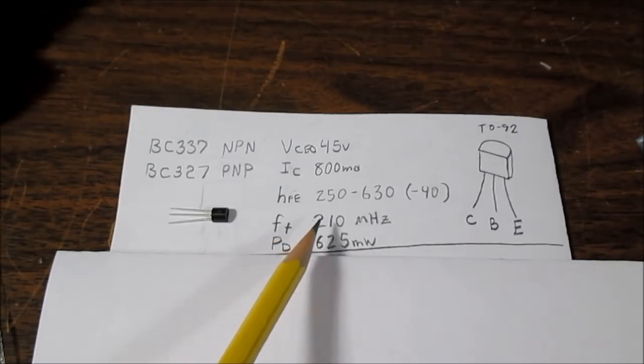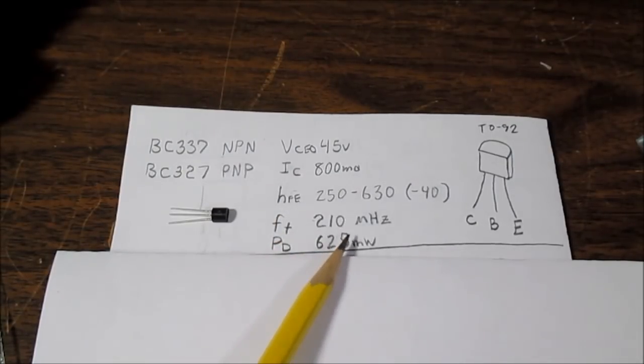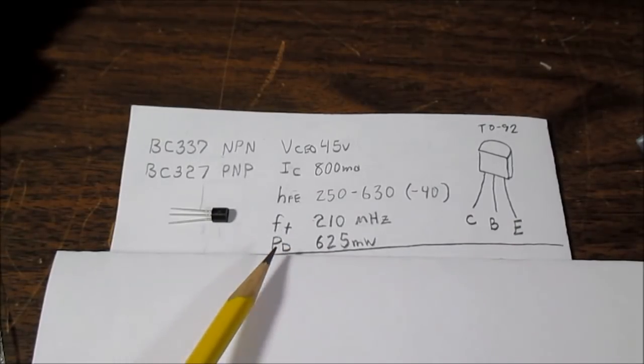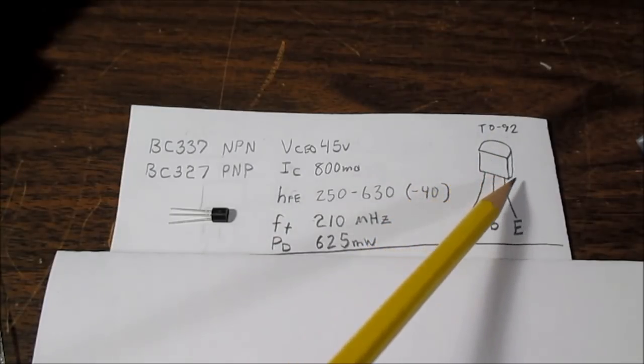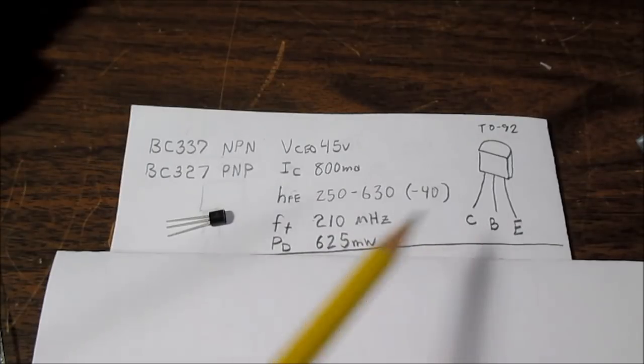Transition frequency is 210 megahertz. Transition frequency by the way is the frequency where the transistor stops amplifying. As you increase the frequency, the gain becomes less and less and less to a point where it's not amplifying anymore. So that's in a nutshell what transition frequency is. Power dissipation is 625 milliwatts. It comes in a TO92 package, just like this here, and with this pinout.